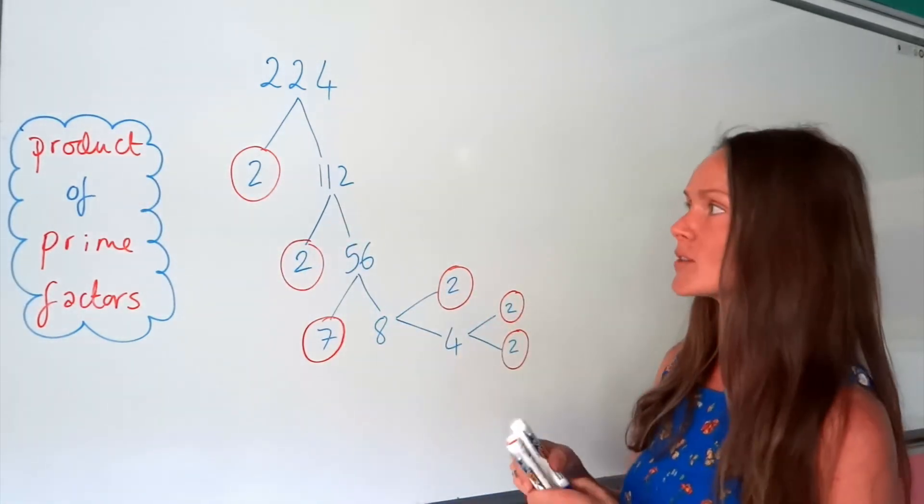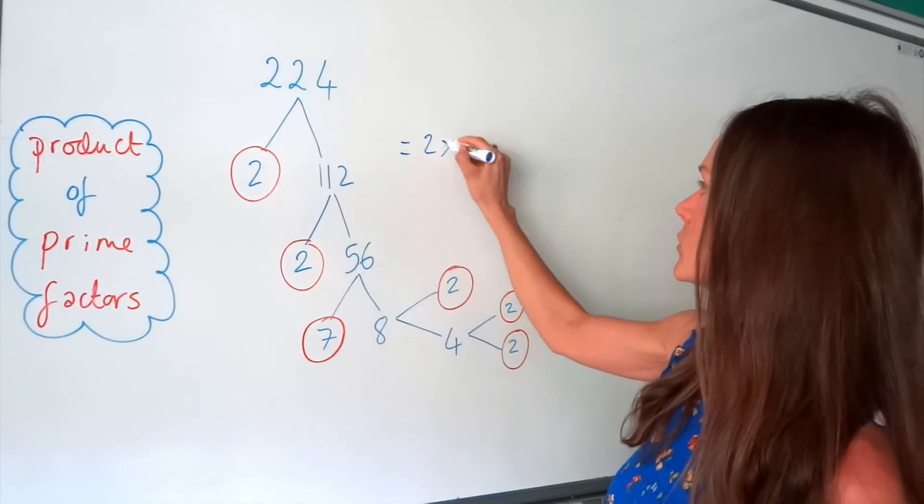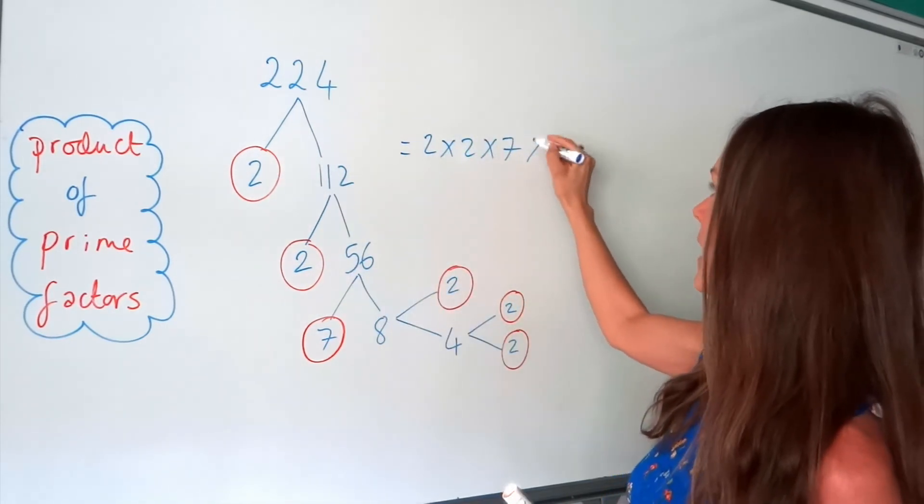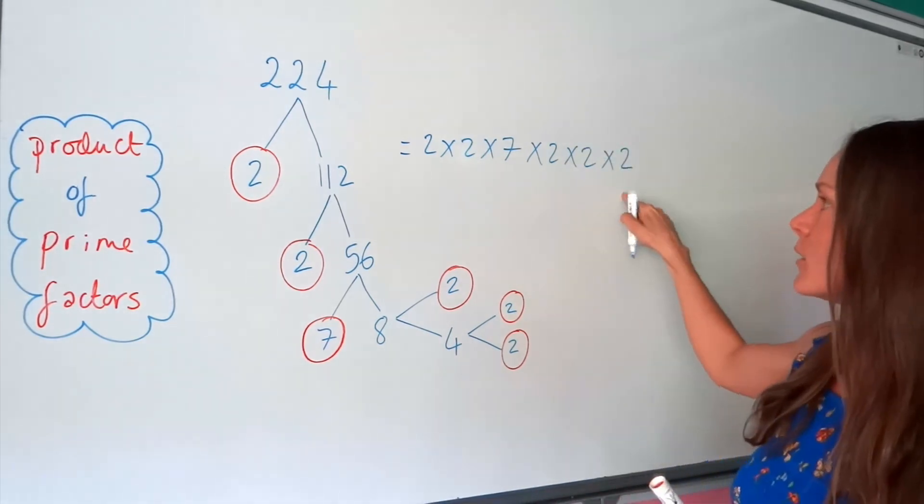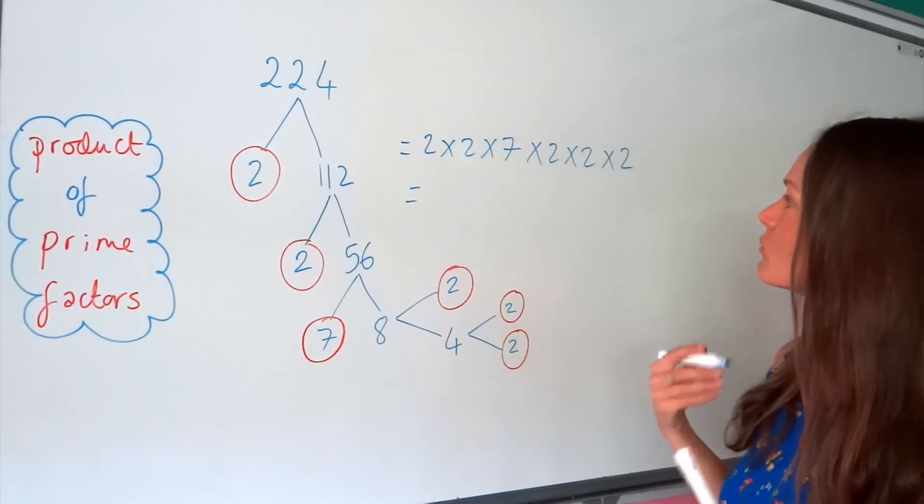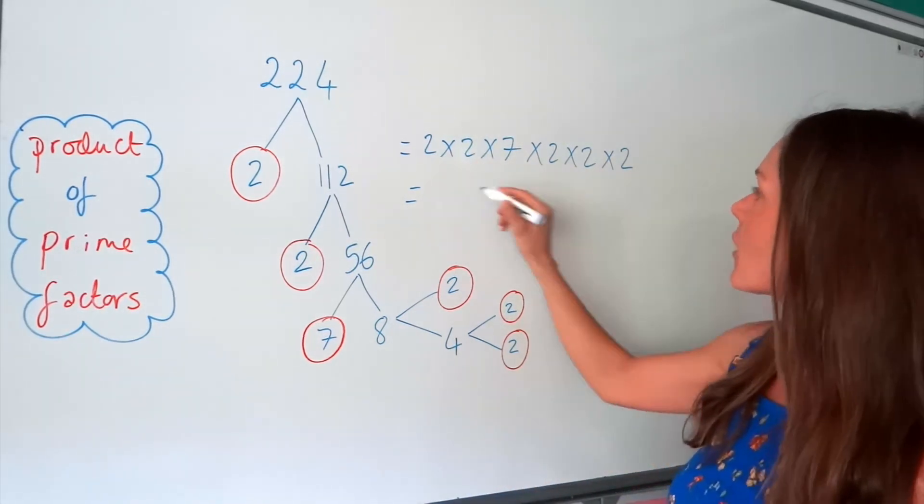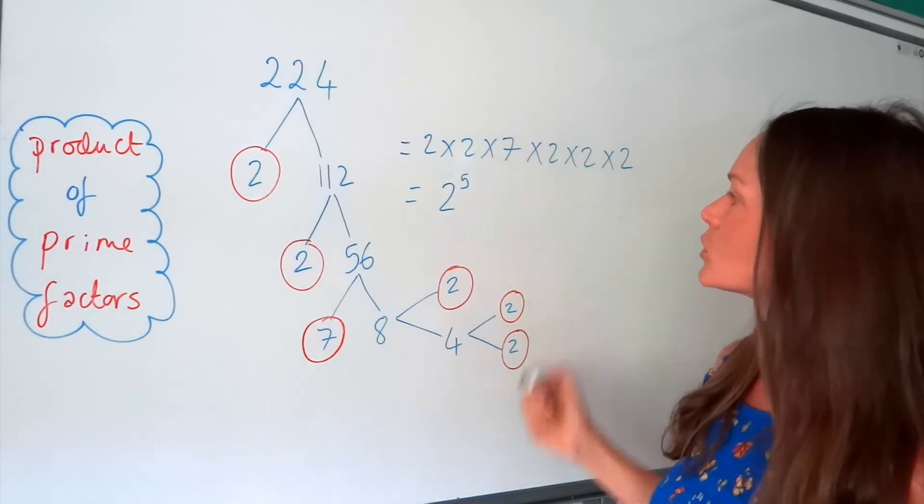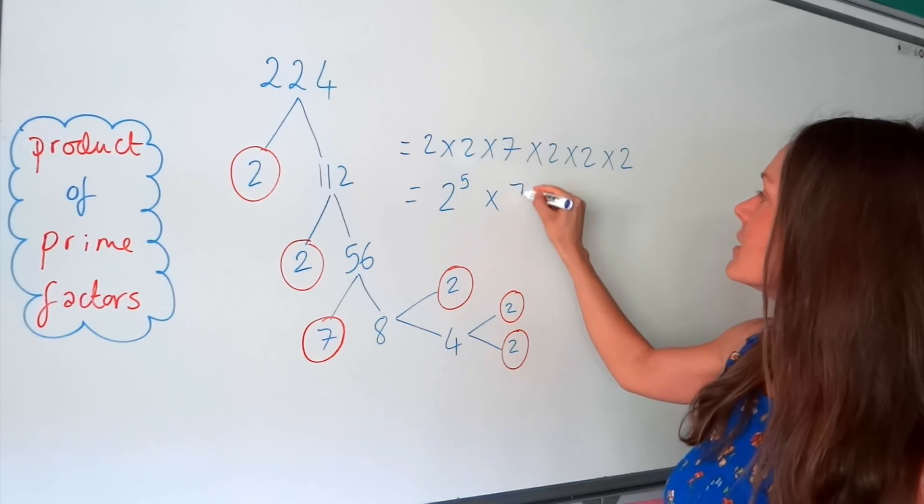So you need to multiply all those numbers together. So I've got 1, 2, 2 2s, and then a 7, and 3 more 2s. So don't leave any of them out. Remember, if you want to write that a little bit more neatly, you could count the number of 2s and there are 5. So you could rewrite that as 2 to the power of 5 because that's exactly the same thing. Not forgetting the 7.